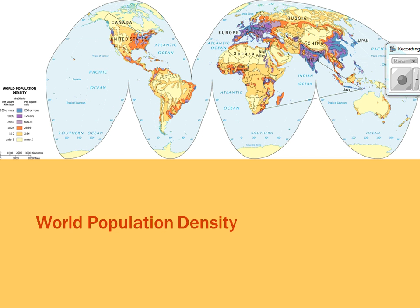It's important to really notice where the darker areas are. China has the most people, India is second, Europe is third, and the United States is actually fourth. Understanding those areas where the majority of the population lies and why is a big deal for this chapter.